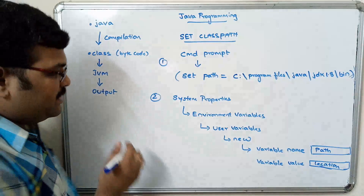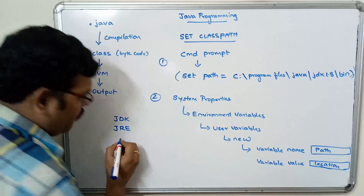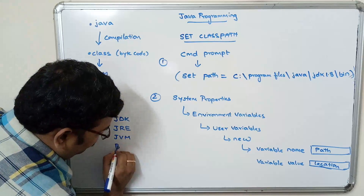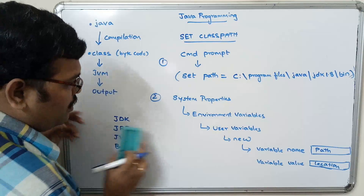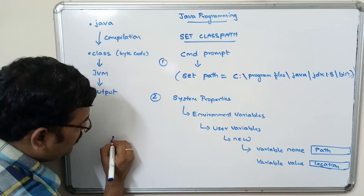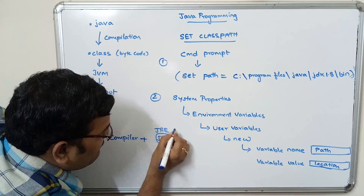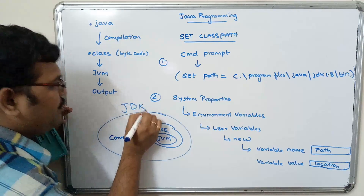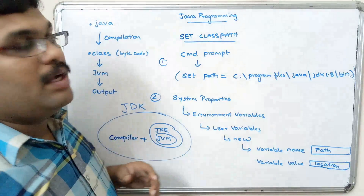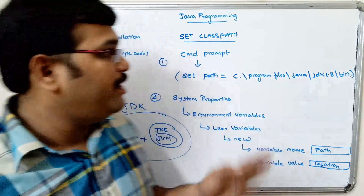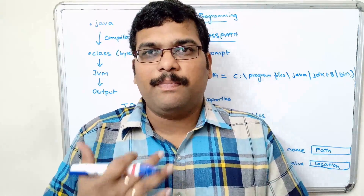So I hope you understand the basic terminologies: JDK is Java Development Kit, JRE is Java Runtime Environment, JVM is Java Virtual Machine, and bytecode is the compiled output. JDK consists of the compiler plus JRE, and inside JRE there is JVM. This is the basic introduction to Java — how to execute Java programs and how to set the class path.